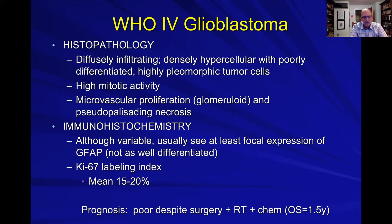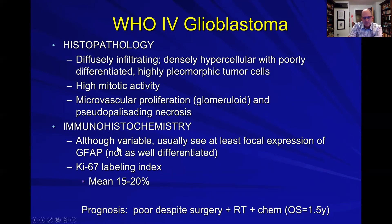To wrap up histopathology: GBMs are diffusely infiltrating, very hypercellular, poorly differentiated, with lots of pleomorphic tumor cells and a very high mitotic rate. You now see a lot more microvascular proliferation and necrosis — called pseudopalisating necrosis. Immunohistochemistry is more variable, but you may see GFAP positivity. KI67 is much higher, up in the 20% range. Prognosis is very poor despite all therapies, with an overall survival of about one and a half years.